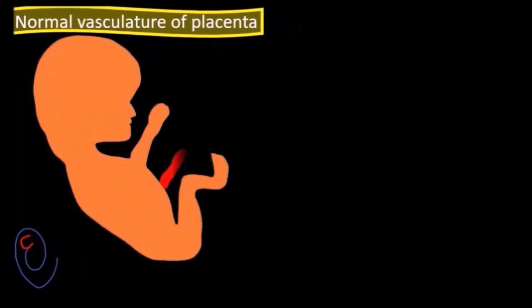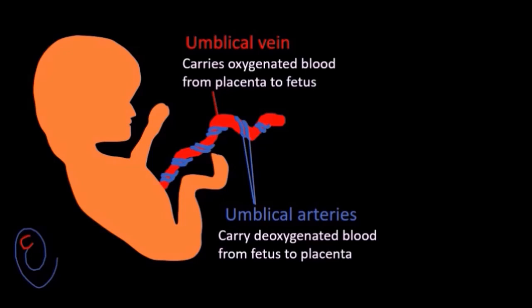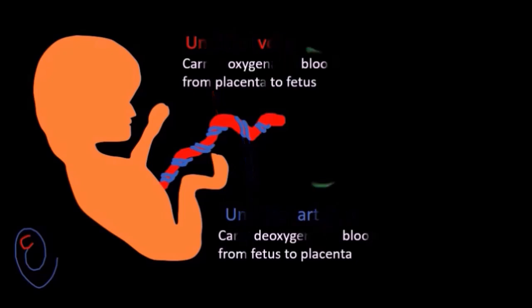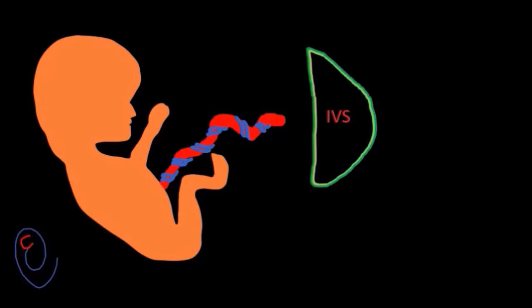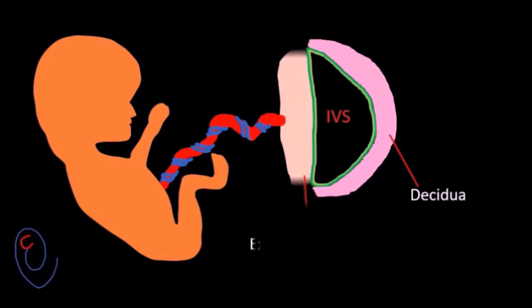The fetus is connected to the placenta through the umbilical cord, which is formed of a single large vein and two small arteries. The umbilical vein is drawn in red because it carries oxygenated blood from the placenta to the fetus, while umbilical arteries are drawn in blue because they carry deoxygenated blood from the fetus to the placenta. The placenta itself is formed of a single large space called the intervillous space. Maternal tissue adjacent to the space is called decidua.